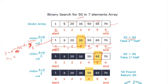Now lower limit is 4 and upper limit is 4. The new mid is (4 + 4) / 2 = 4. We check if A[mid] equals the key element. If it matches, we return the index position. The flag is set to true and the index is returned.